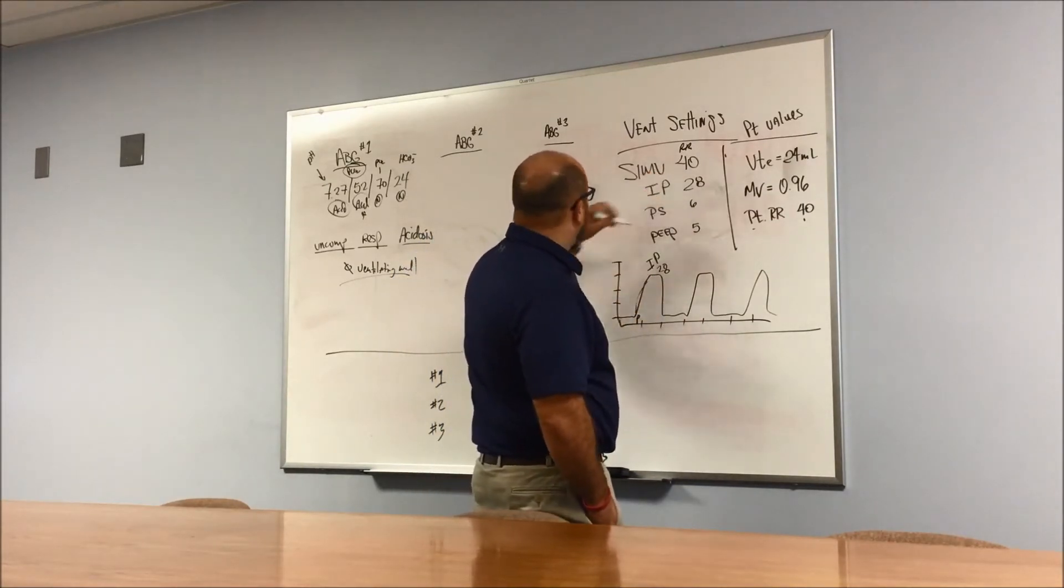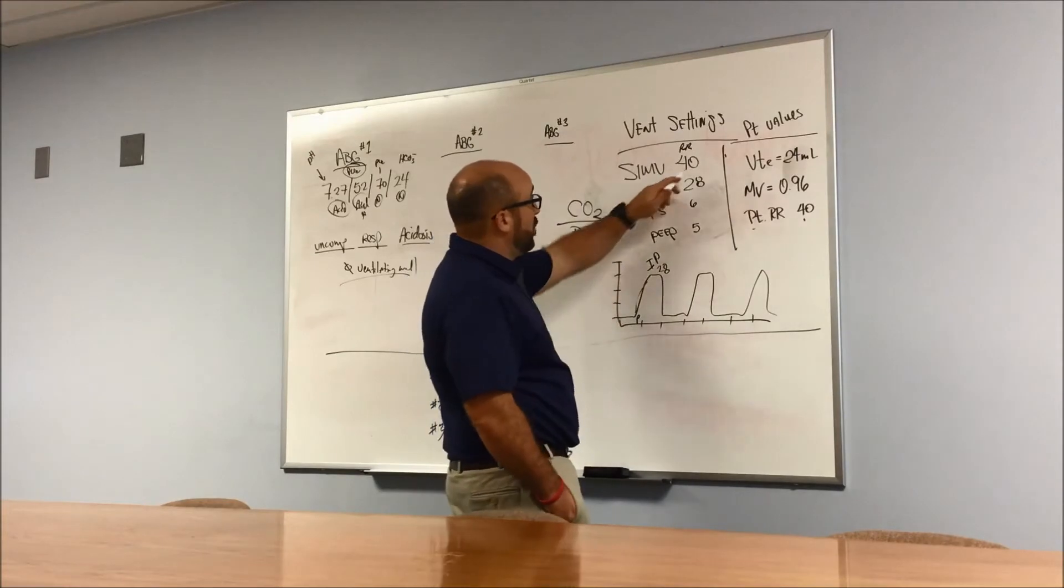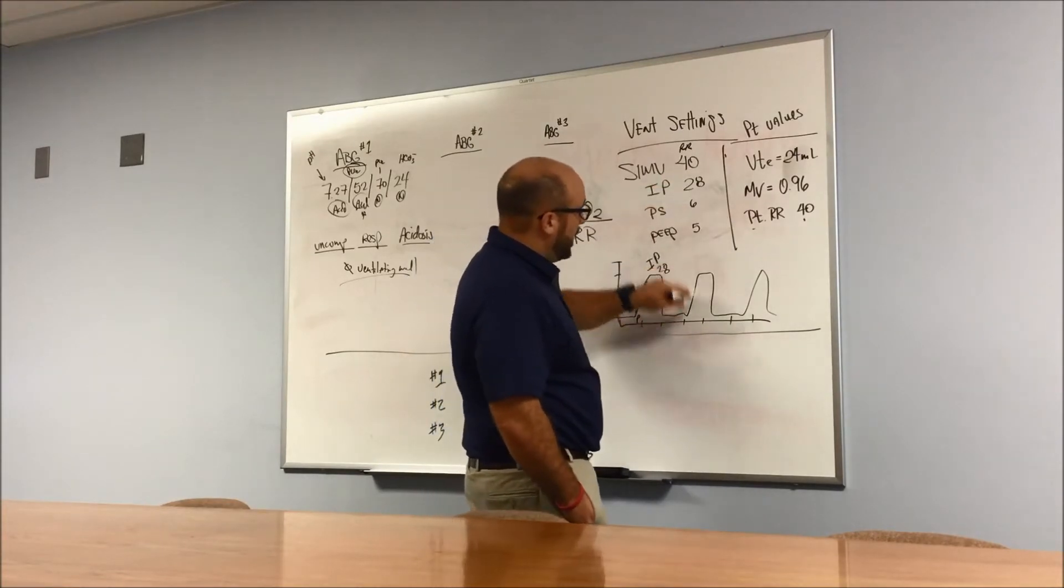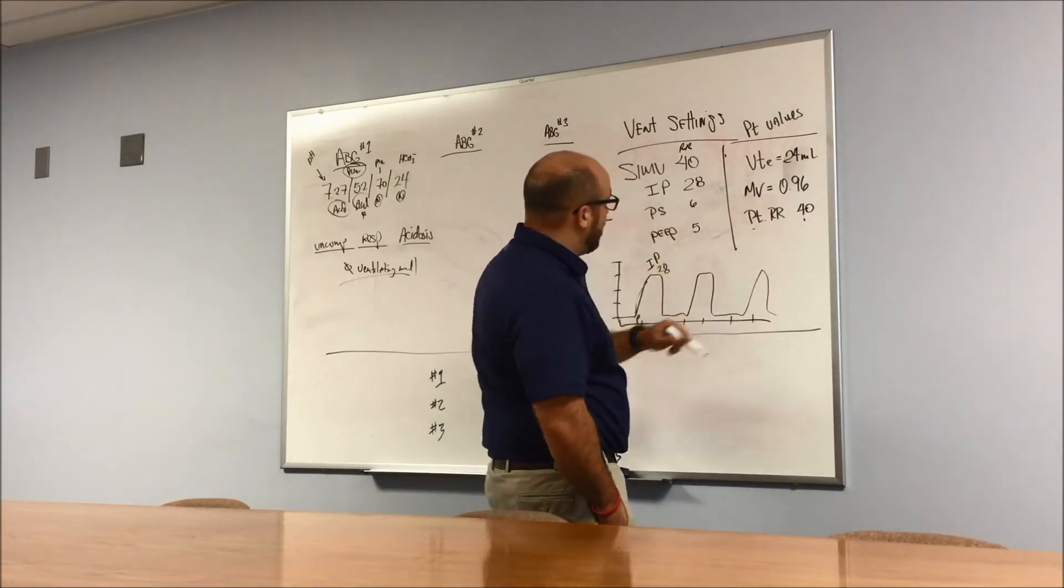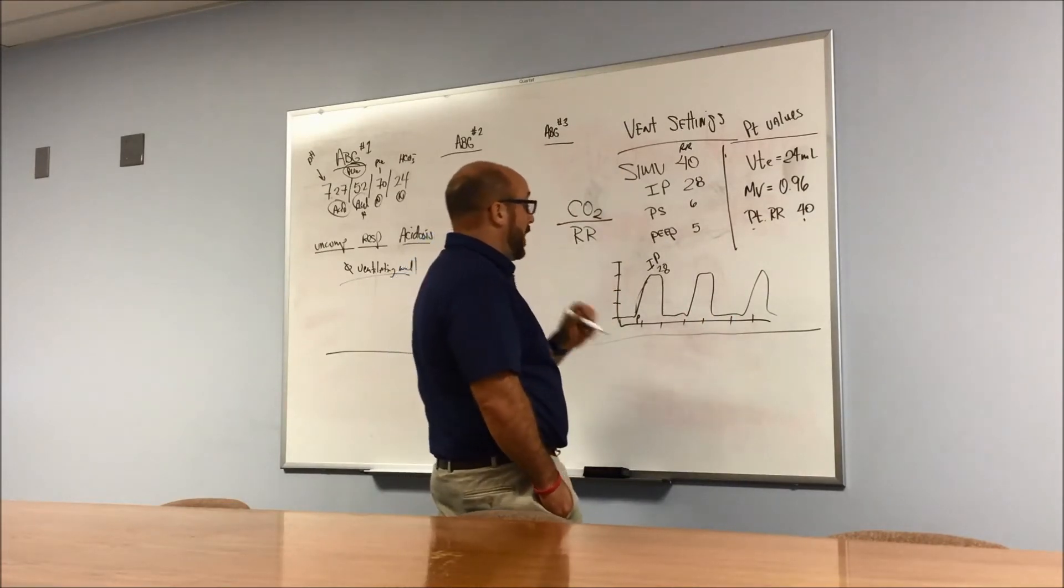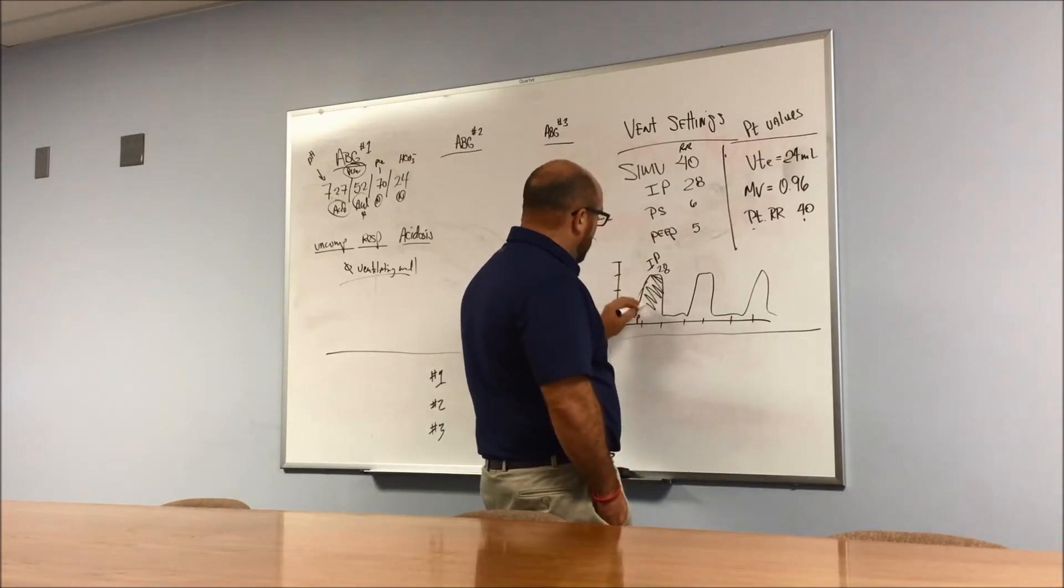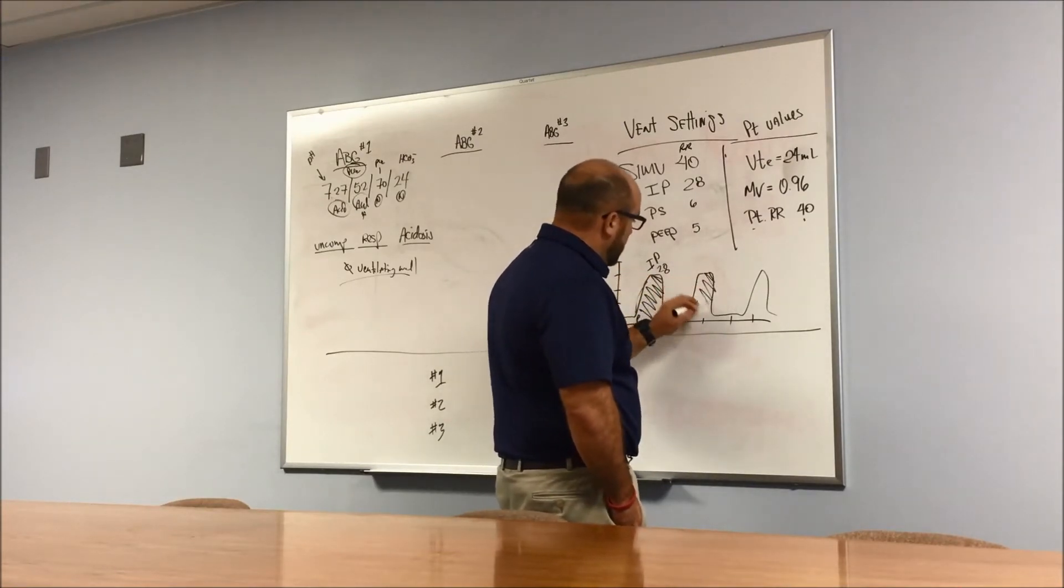So in these cases, 28 is our IP, 5 is our PEEP, and then we get some pressure support in here. But these, you can see that the patient's rate is 42 just to make all my math really easy, so 40 breaths per minute. So a couple things that can affect the CO2: respiratory rate, of course. If I change the respiratory rate, I'd be more than 40 per minute, I'm going to hit this peak more often, therefore I'm going to get more air in and then subsequently more air out.